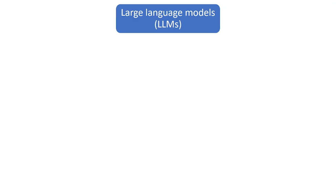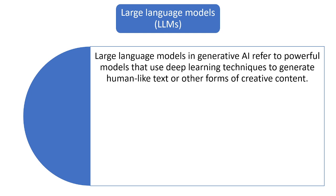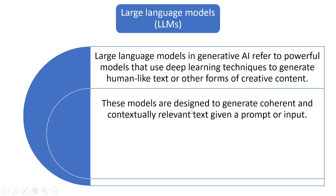LLM models are used in generative AI to refer to powerful models that use deep learning neural networks to generate human-like text and creative content. These models are designed to generate coherent and contextually relevant text by taking an input or prompt, and from that input only, they can generate new content or a new output.